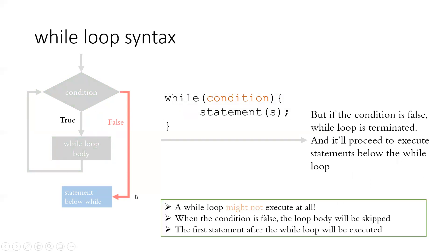A while loop might not execute at all. This is because the while loop checks its condition first. So if your condition already returns false on the first iteration, it will not execute at all — it will simply skip the loop body and proceed to executing the statement below your while loop.